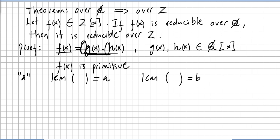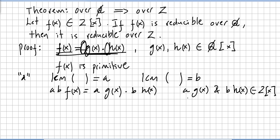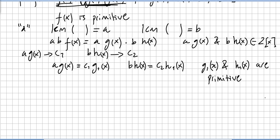If this is the case, it is obvious that ab·f(x) equals a·g(x) times b·h(x). Both a·g(x) and b·h(x) are in the ring of integers.